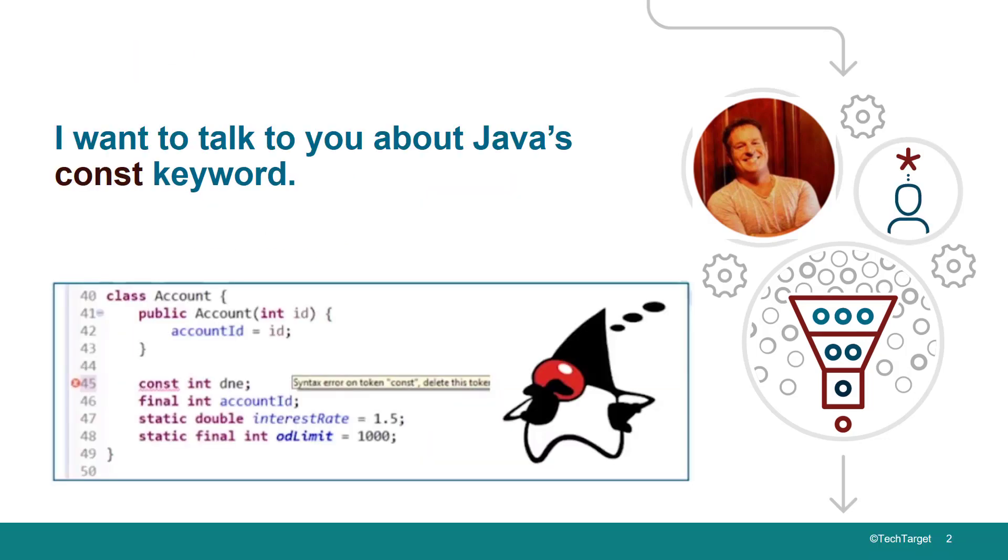You can see there's a screenshot of some Eclipse code where I've used the const keyword and tried to declare an int as const. You'll notice that Eclipse has highlighted it in a pink violet color, not violent color.